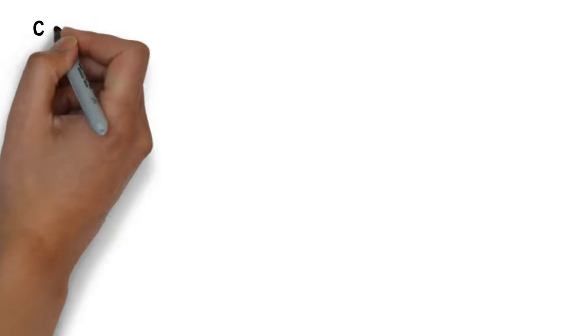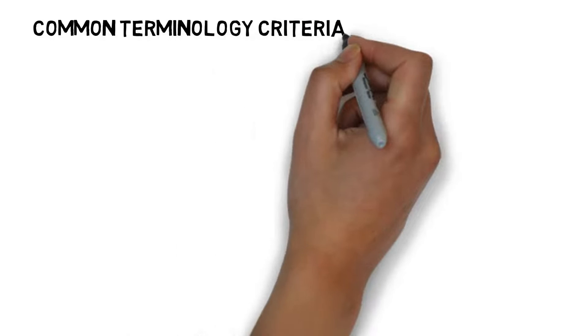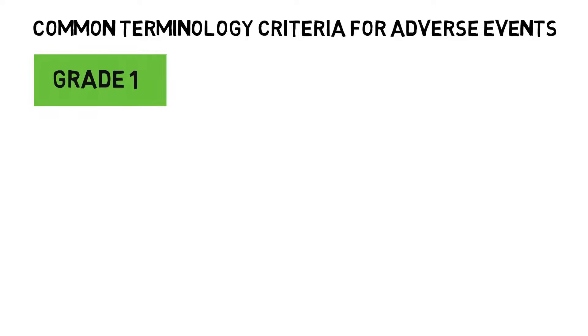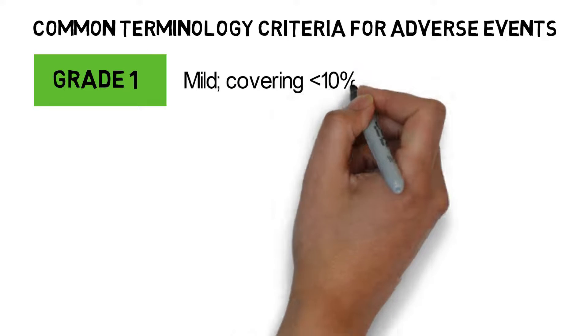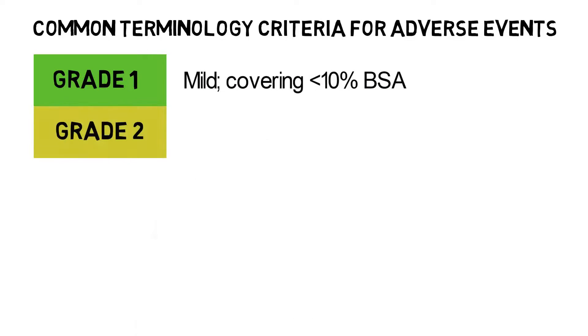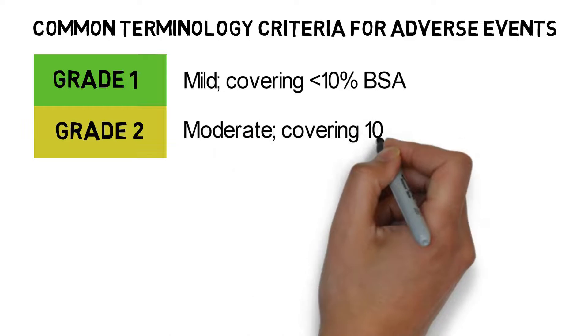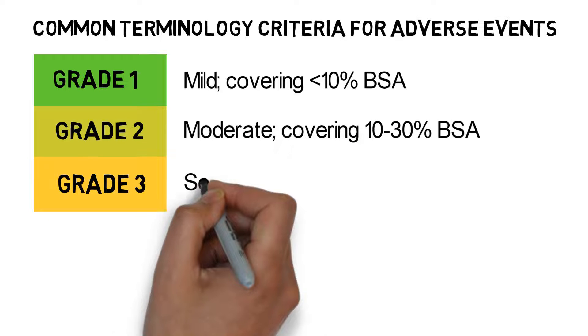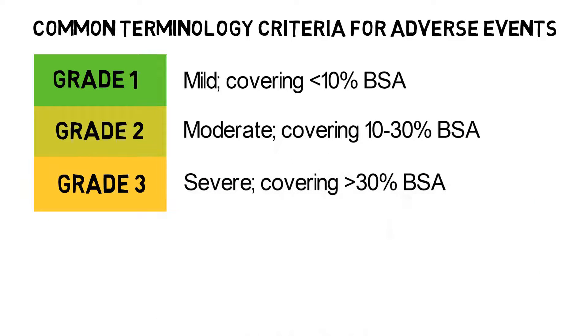Grading is based on common terminology criteria for adverse events, or CTC-AE. Generally, for skin rashes, grade 1 is mild, covering less than 10% of body surface area. Grade 2 is moderate, covering 10% to 30%. Grade 3 is severe, covering over 30% of body surface area.